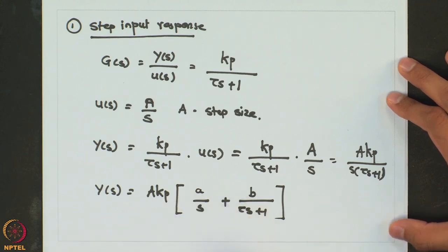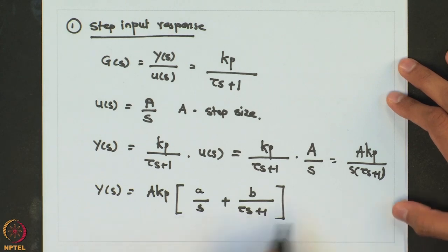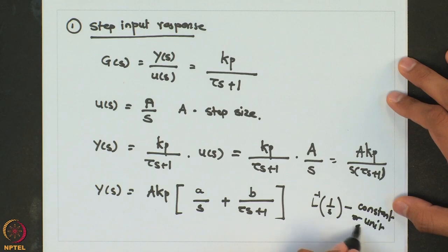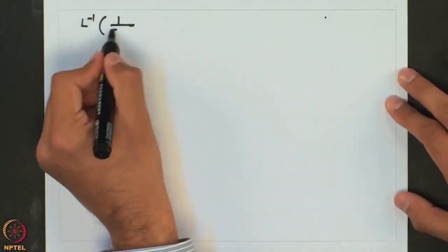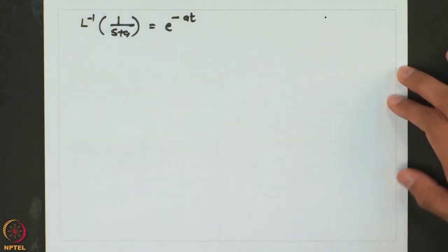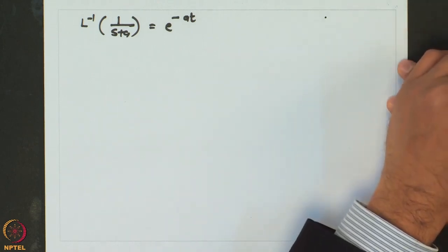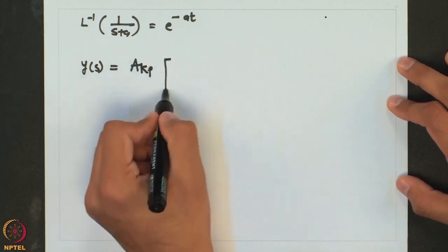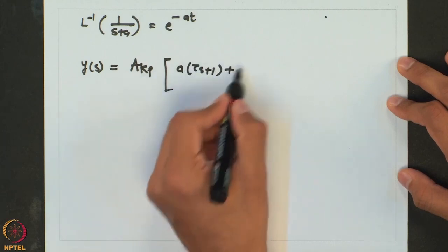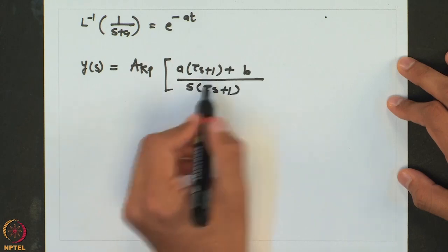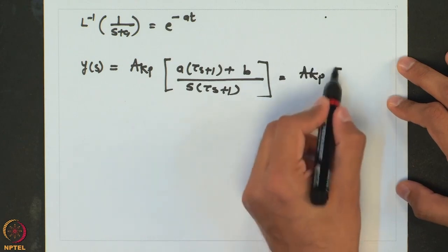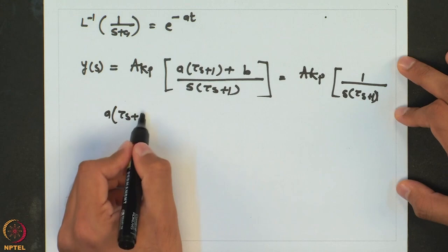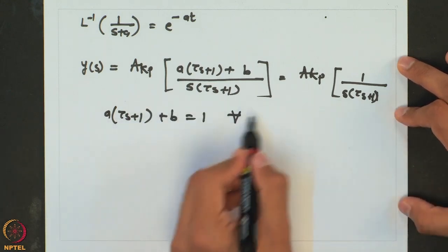The idea is to find coefficients a and b. Once we have them, we know the inverse Laplace of 1 over S is a constant or unit step, and the inverse Laplace of 1 over (S + A) is e raised to minus A·t. So we need A·(tau·s + 1) + B·S = 1 for all values of S.